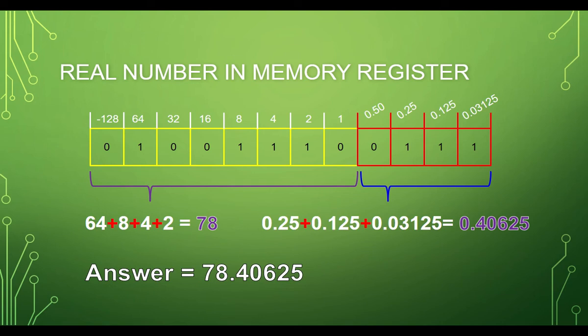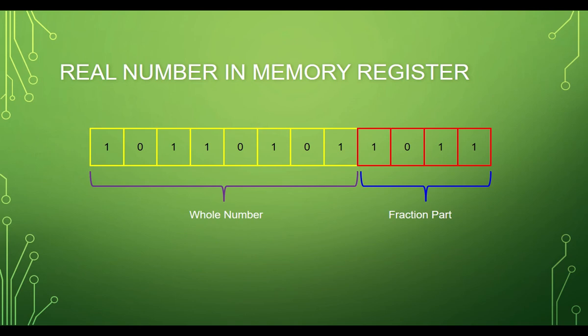Let's take another example. Suppose we were given these binary numbers. Let's write the equivalent of each bit in decimal form, starting from the whole number and followed by the fraction part. Let's convert the fraction part into decimal.